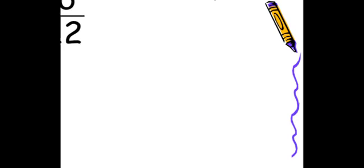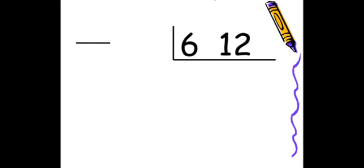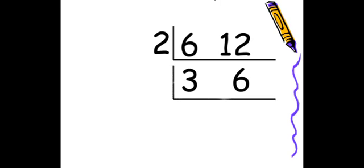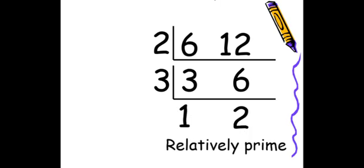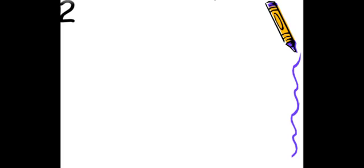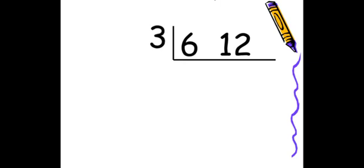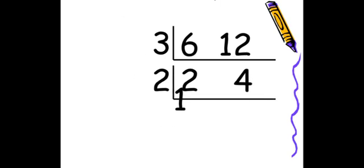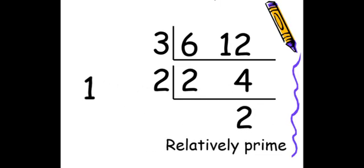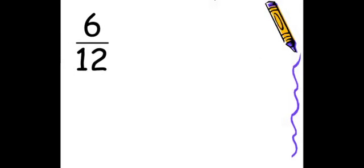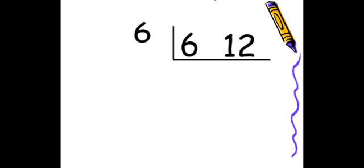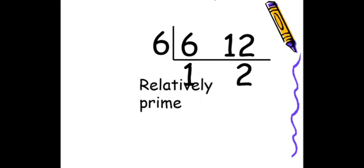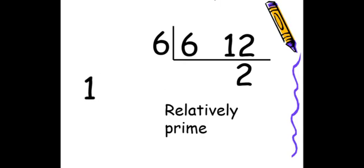A third example: 6 over 12. What number could go into 6 and 12 evenly? If you guessed 2, you are correct. 6 divided by 2 is 3, and 12 divided by 2 is 6. But you would have to try 3 now. 3 divided by 3 is 1, and 6 divided by 3 is 2. So our fraction in simplest form, since 1 and 2 are relatively prime, is 1 over 2. Another way would be to start with 3 first: 6 divided by 3 is 2, 12 divided by 3 is 4, then 2 divided by 2 is 1, and 4 divided by 2 is 2. And the quickest way is to factor out the greatest common factor, which is 6. 6 divided by 6 is 1, and 12 divided by 6 is 2, giving us 1 over 2.